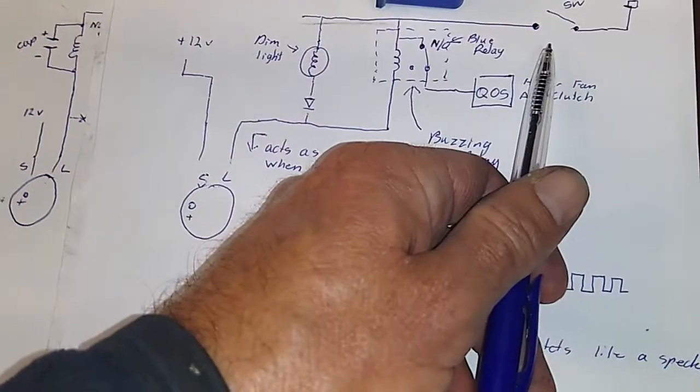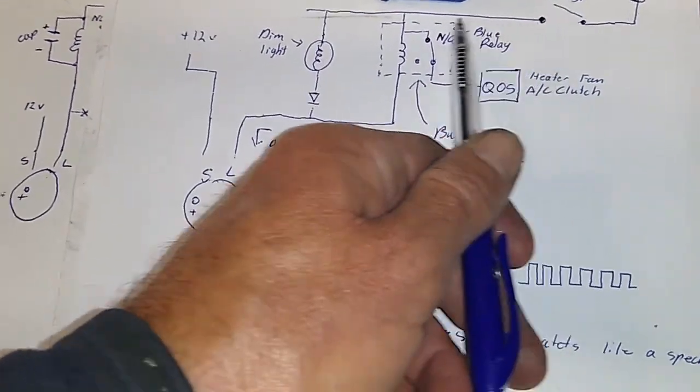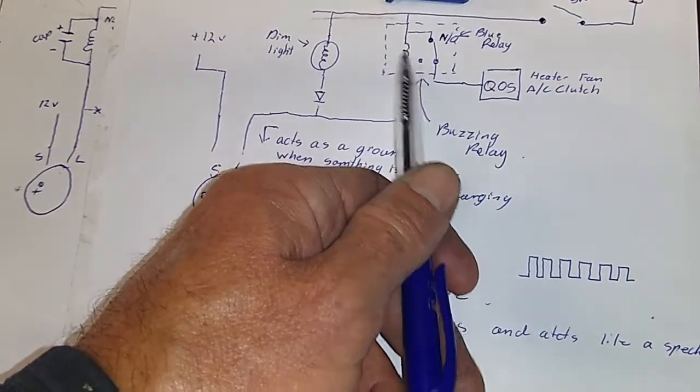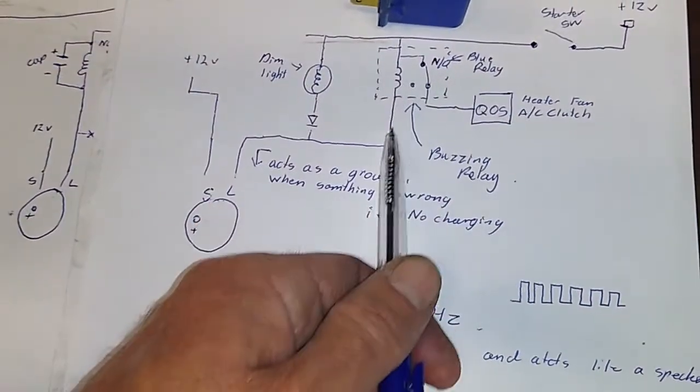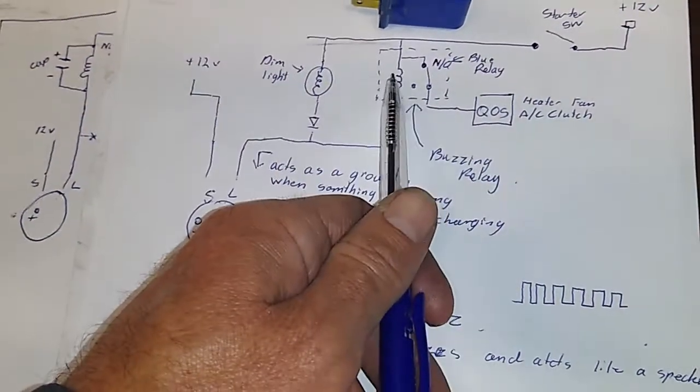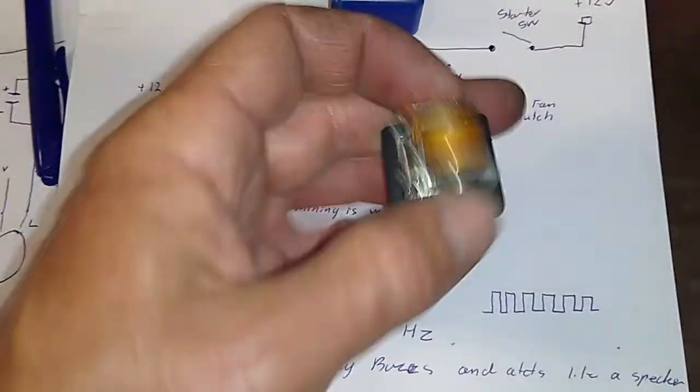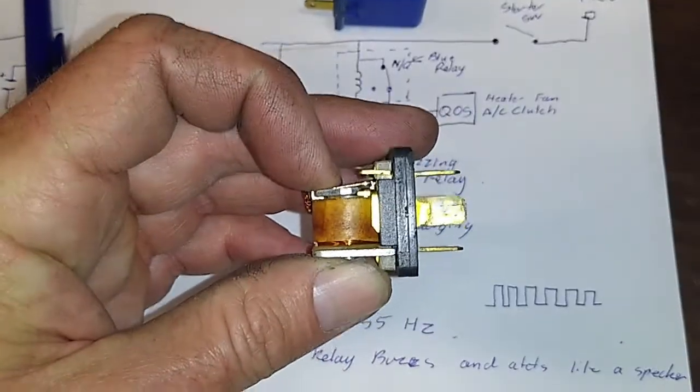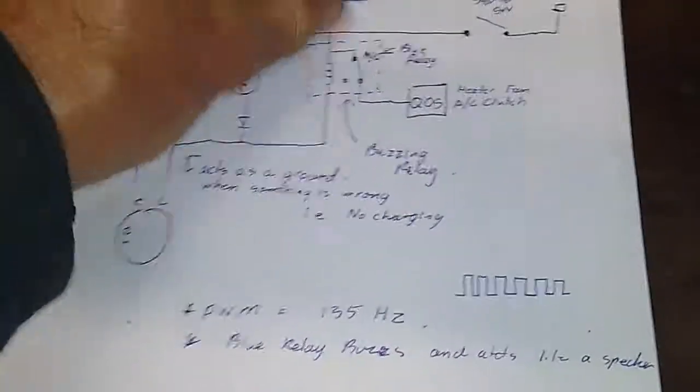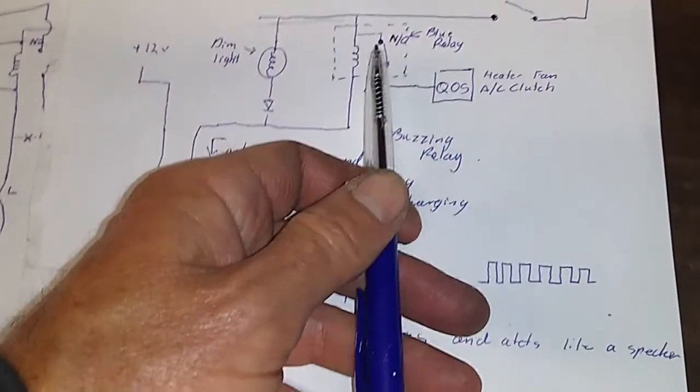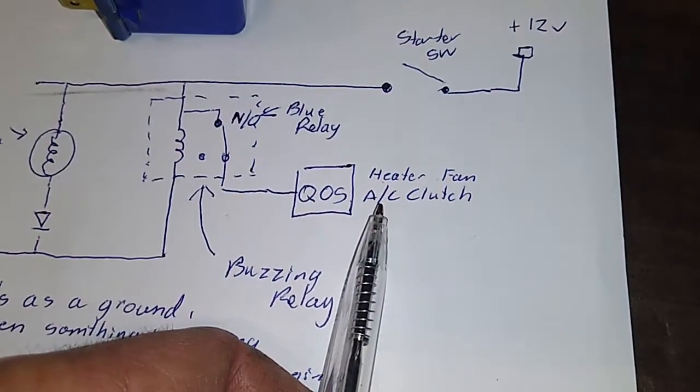Now when you're about to start your vehicle and the switch closes and the power comes along, goes through the relay through here down to ground, the relay engages or shuts as I said and starts to make the buzzing noise. And the reason it does this, the reason we have this, is because this relay is designed to turn off your heater fan and air conditioning clutch because that uses unnecessary extra power.